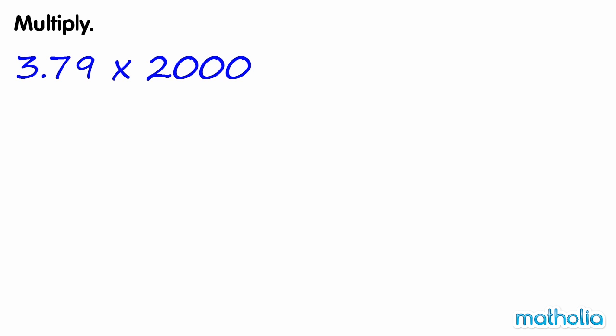Multiply. Find 3.79 times 2,000. 2,000 is a multiple of 1,000. So we can write 3.79 times 2,000 equals 3.79 times 2 times 1,000.